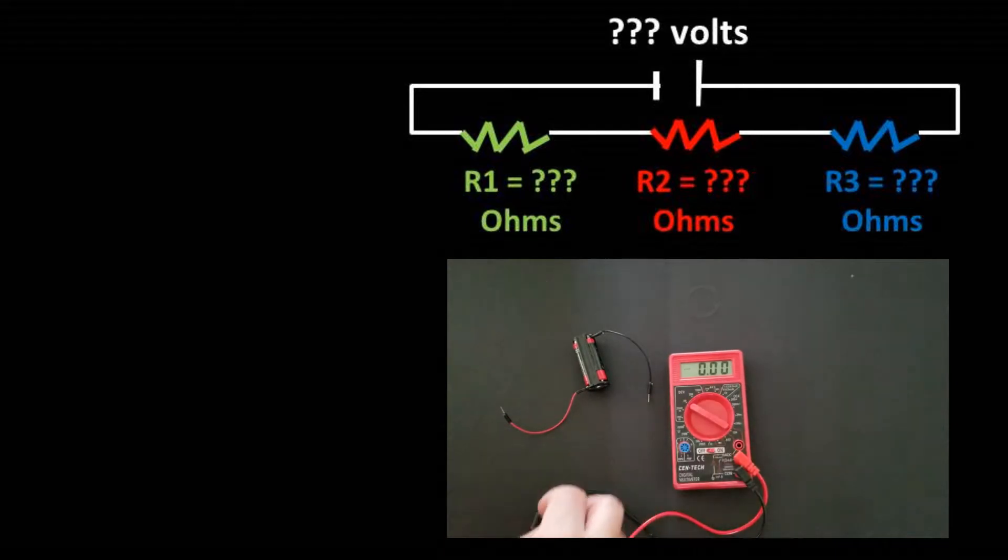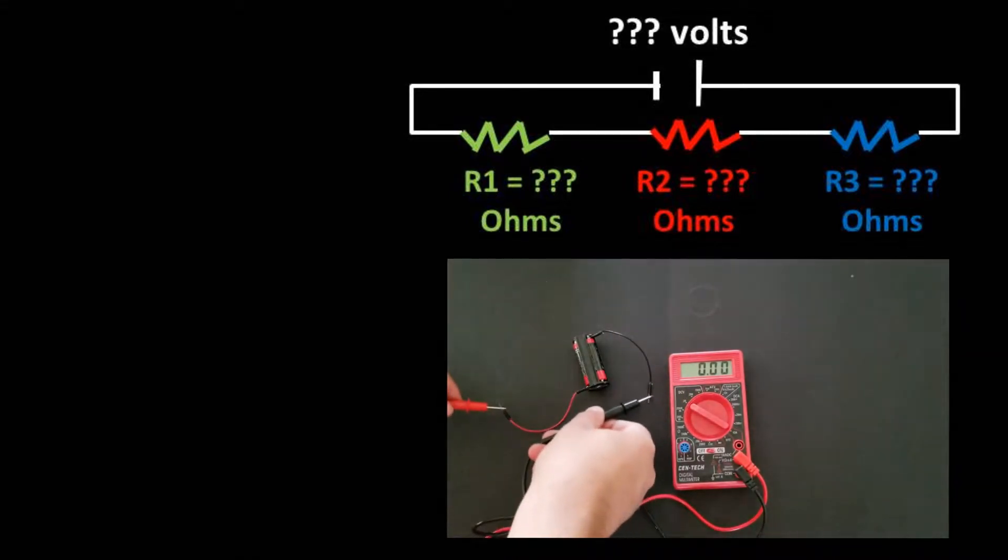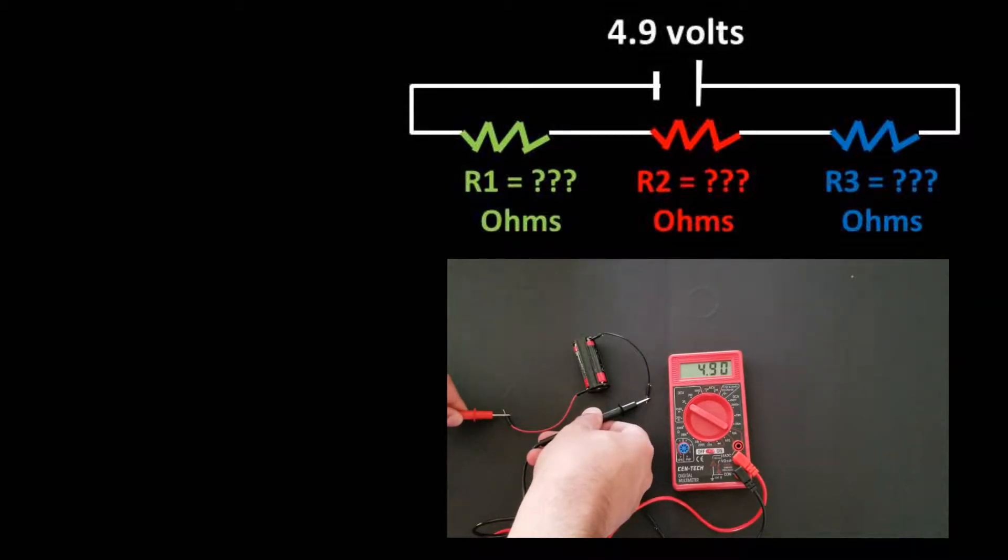The first step is to find the voltage across the battery. This can be done by taking each of the probes of the multimeter and placing them on either side of the battery. We got a voltage of about 4.9 volts in this case.